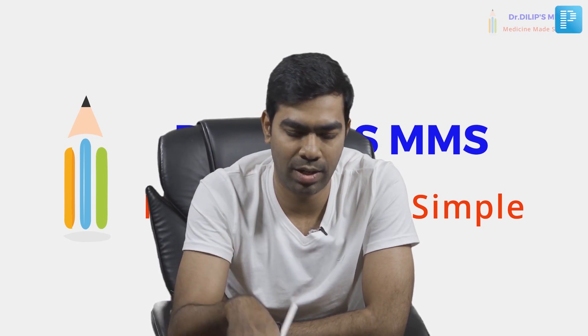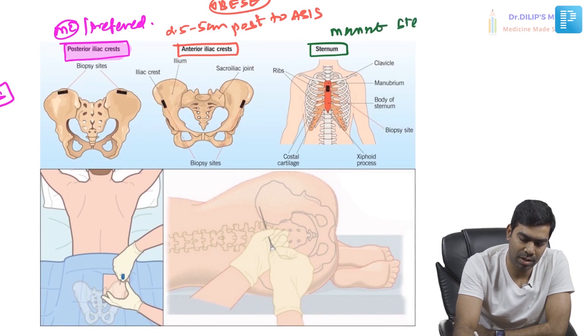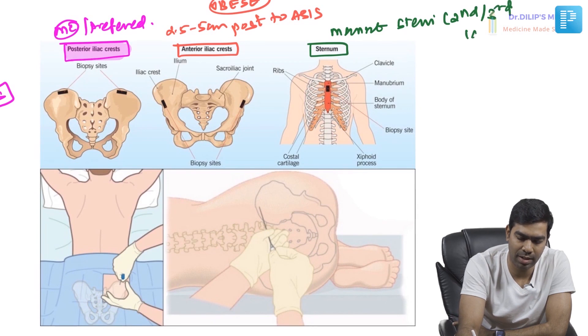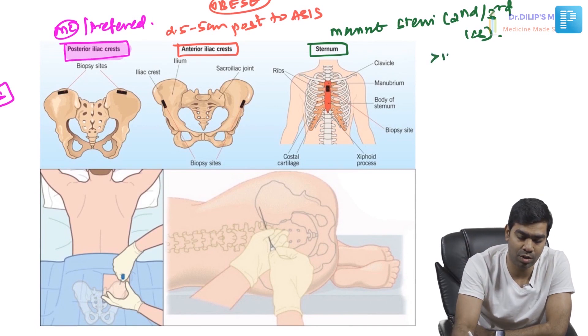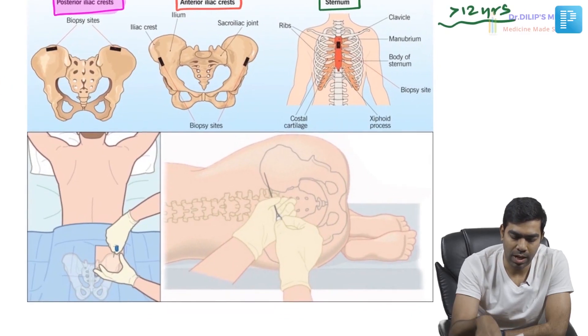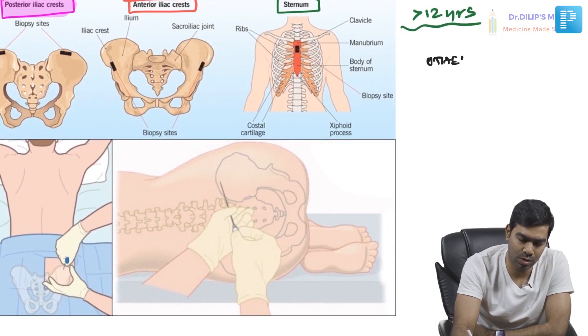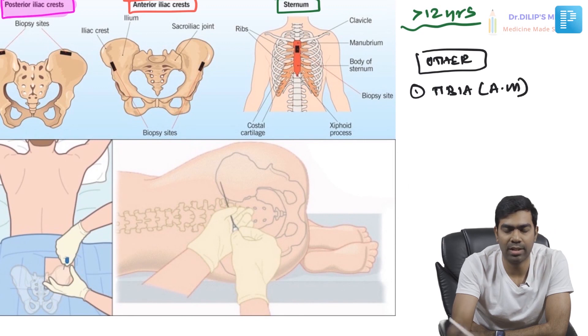In obese patients, you can selectively prefer the anterior iliac crest. The sternum is another preferred site — typically at the manubrium sternum, near the second or third intercostal space. However, sternum should only be used in patients aged more than 12 years. Do not use it in younger children because of the risk of perforation of the sternum — bones are soft and you might go beyond the bone and injure vital structures present behind the sternum.